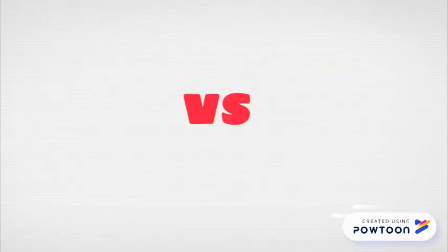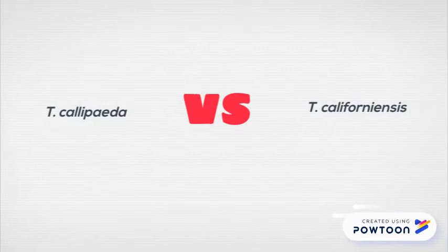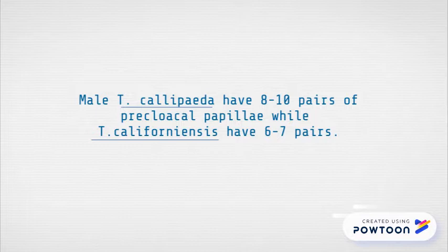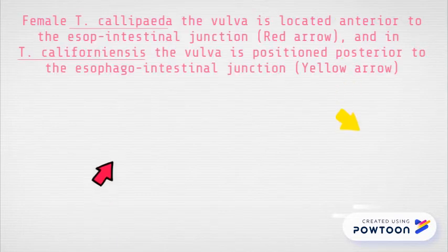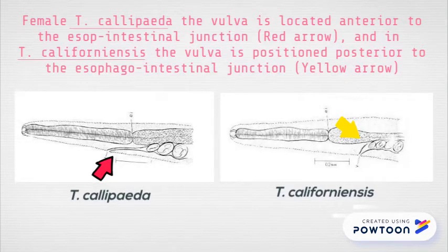Thelazia calipedia can be distinguished morphologically from Thelazia californiensis based on the number of pre- and post-cloacal papillae in the male and the position of the vulva in the female. In the male, Thelazia calipedia has 8 to 10 pairs of pre- and post-cloacal papillae, while Thelazia californiensis has 7 pairs. In the female, the vulva of Thelazia calipedia is located anterior to the esophago-intestinal junction, while in Thelazia californiensis, the vulva is positioned posterior to the esophago-intestinal junction.